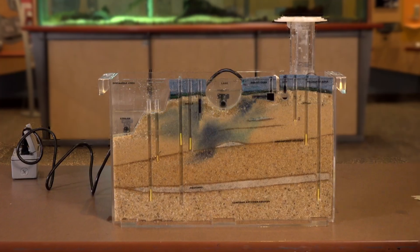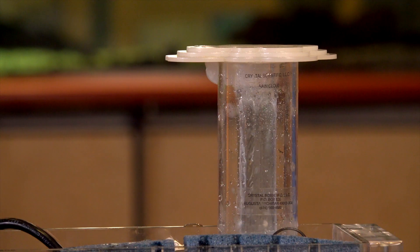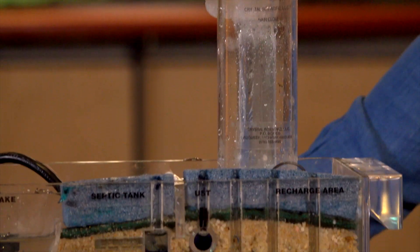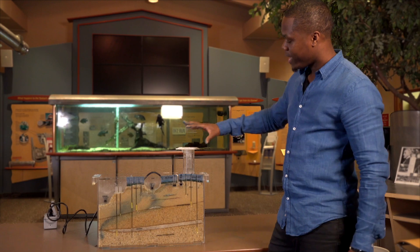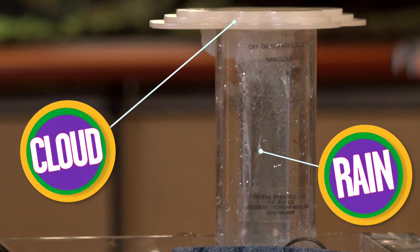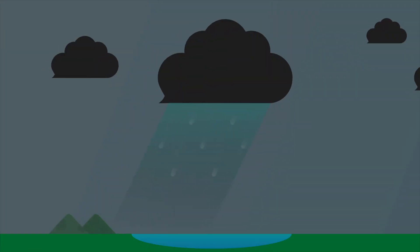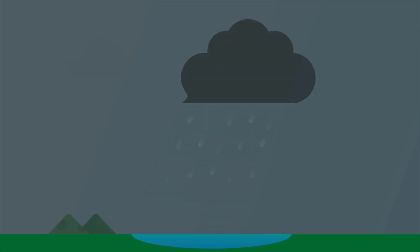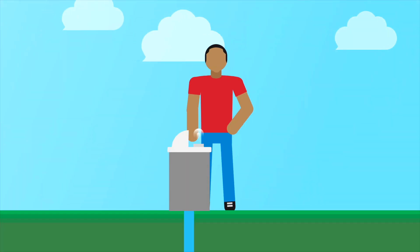This is a miniaturized version of what groundwater flow looks like. So here we have a cloud. When it rains, where does water go? It goes into the ground. It flows through the grass and through the soil, and groundwater is a source of drinking water.